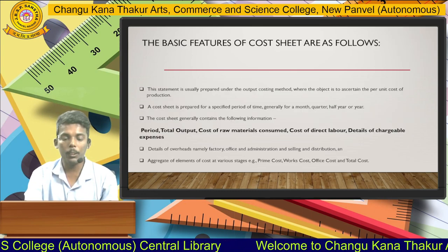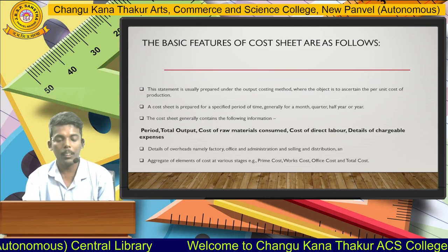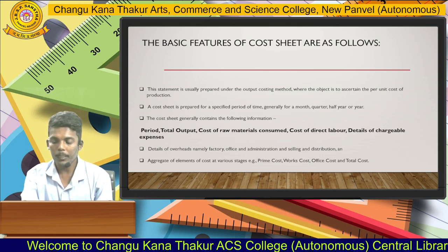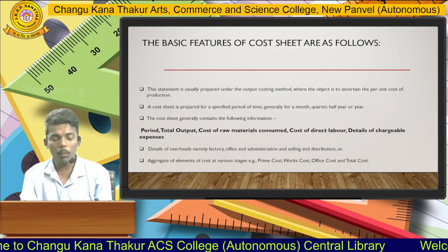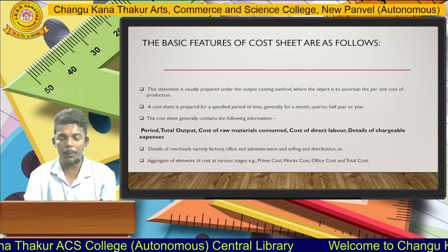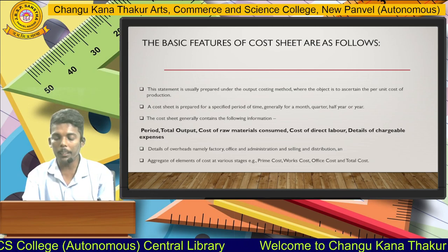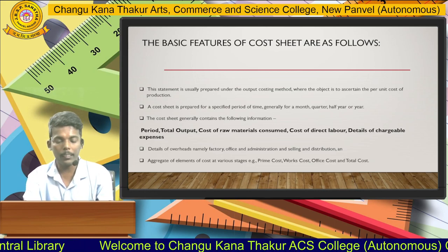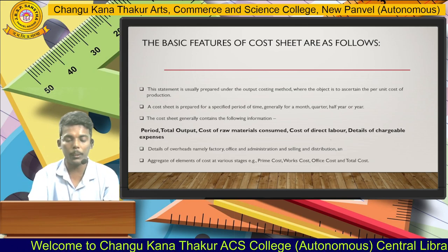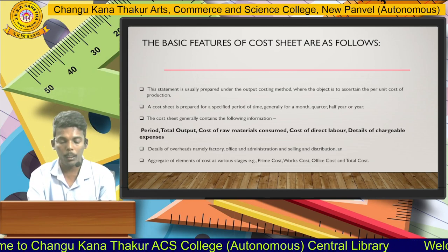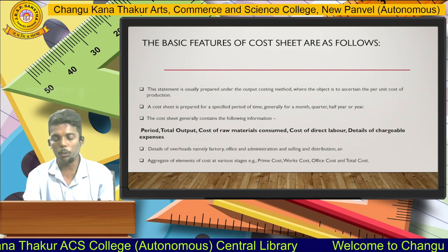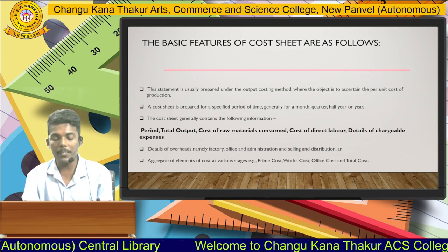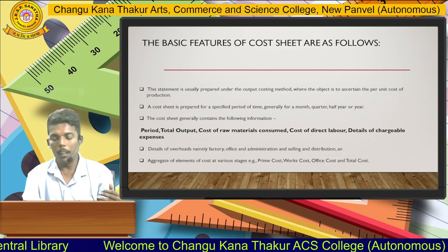I am presenting the basic features of the cost sheet. The cost sheet is prepared first of all for the ascertainment of the total cost of production. Second feature: cost sheet is prepared for a specific period of time — generally monthly, quarterly, half-yearly, or yearly. The cost sheet generally contains the following information: period of the cost sheet, total output during the process, cost of raw material consumed, cost of direct labor, cost of direct expenses, cost of factory, cost of administration, and cost of selling and distribution.